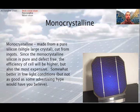First, we learn about the monocrystalline silicon. These are the oldest technology solar cells. Monocrystalline, as its name shows, is made from a pure silicon, a single large crystal cut from ingots. Since the monocrystalline silicon is pure and defect-free, the efficiency of cells will be higher, but also this is the most expensive. Somewhat better in low light conditions, but not as good as some advertising hype would have you believe. Efficiency of these cells varies from 14 to 17%. Performance of these cells is not good at high temperature, but occupies significantly less volume to produce the same amount of power. These are two times more expensive when compared to thin-film solar cells.